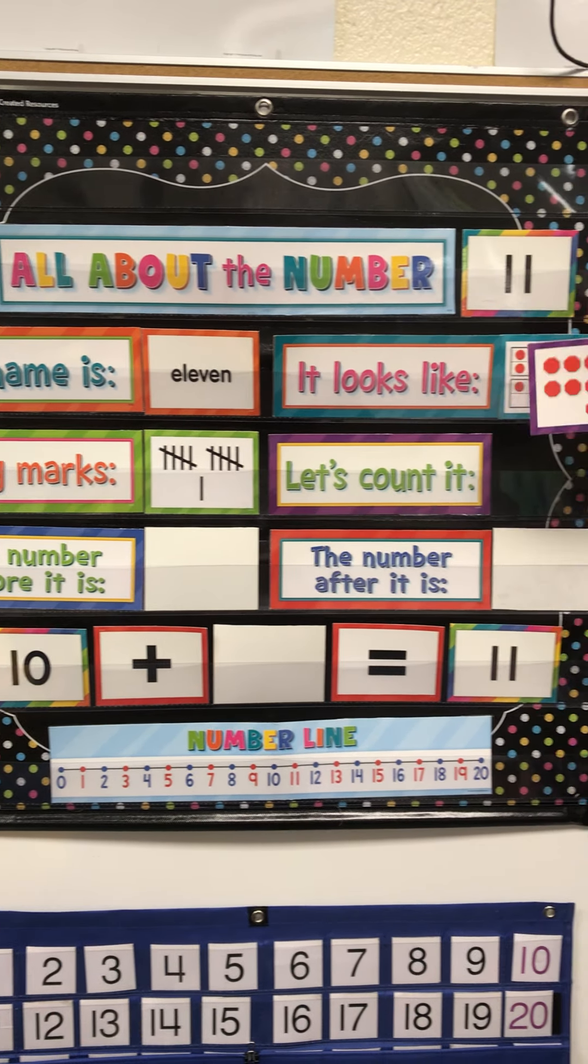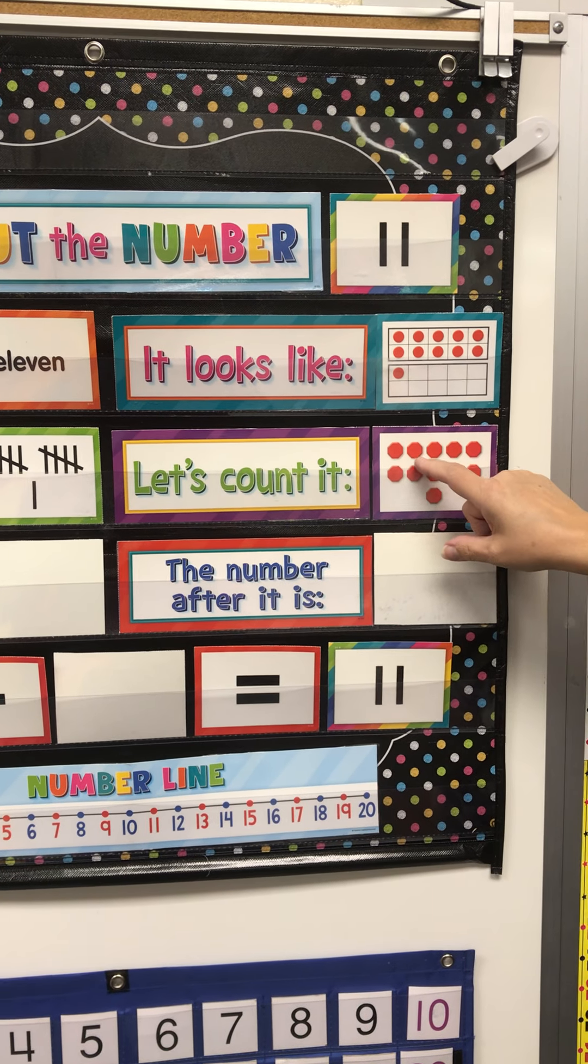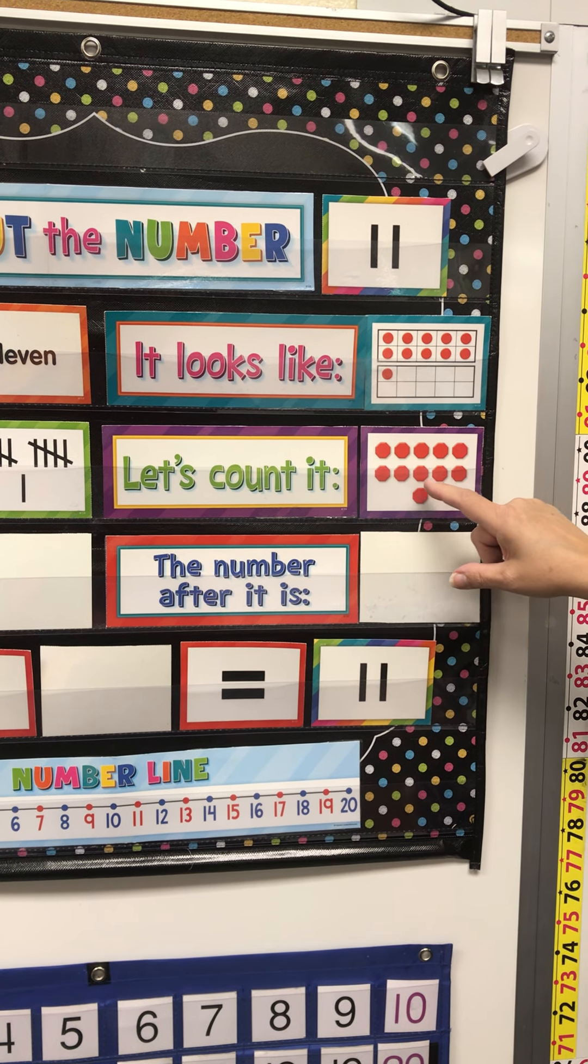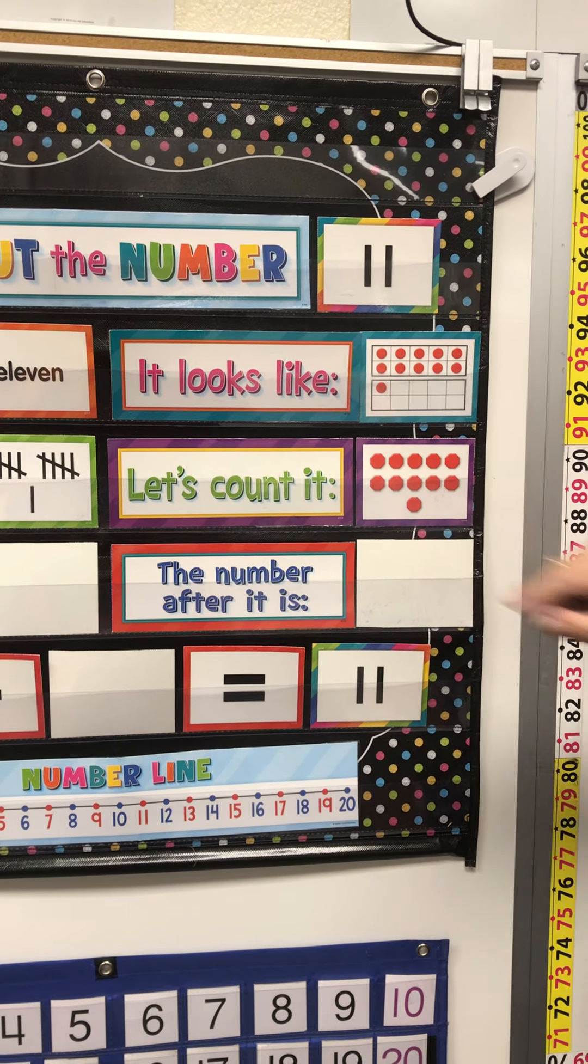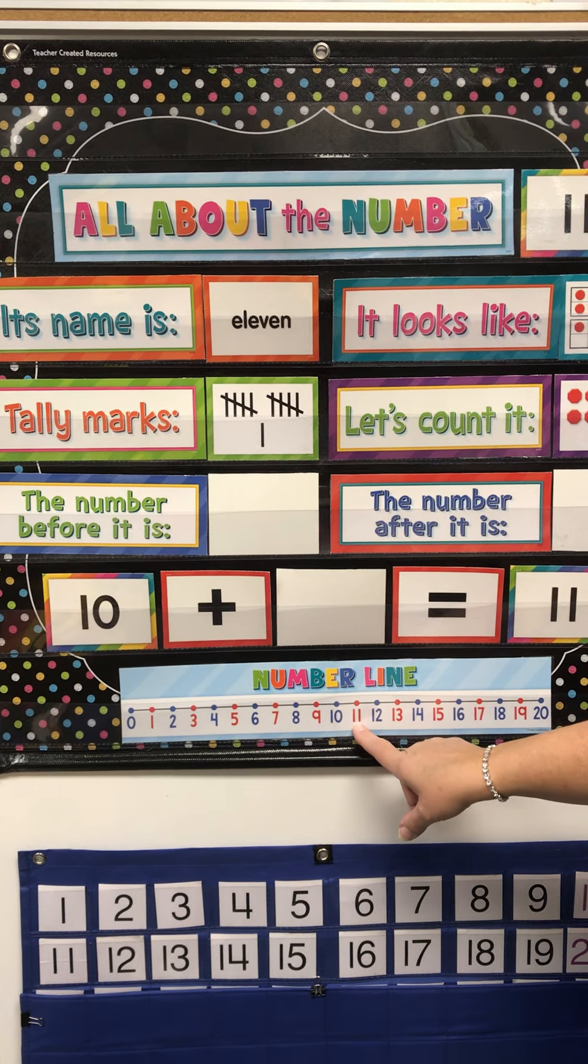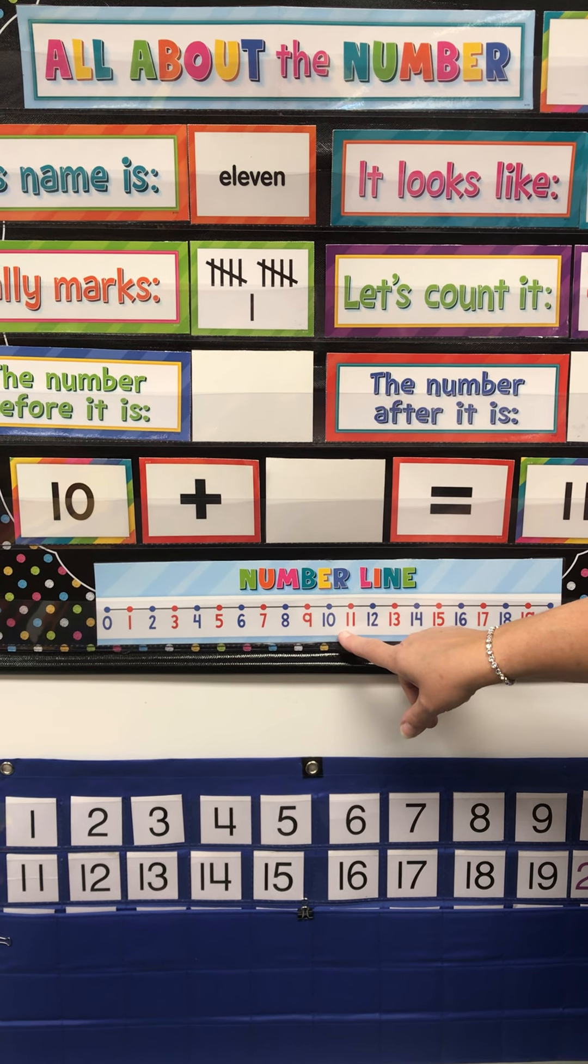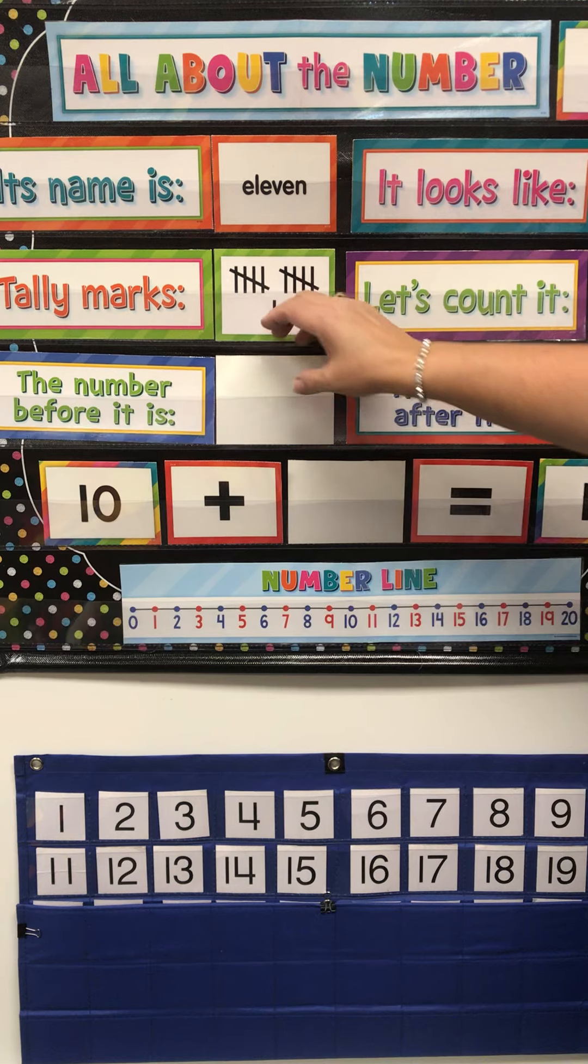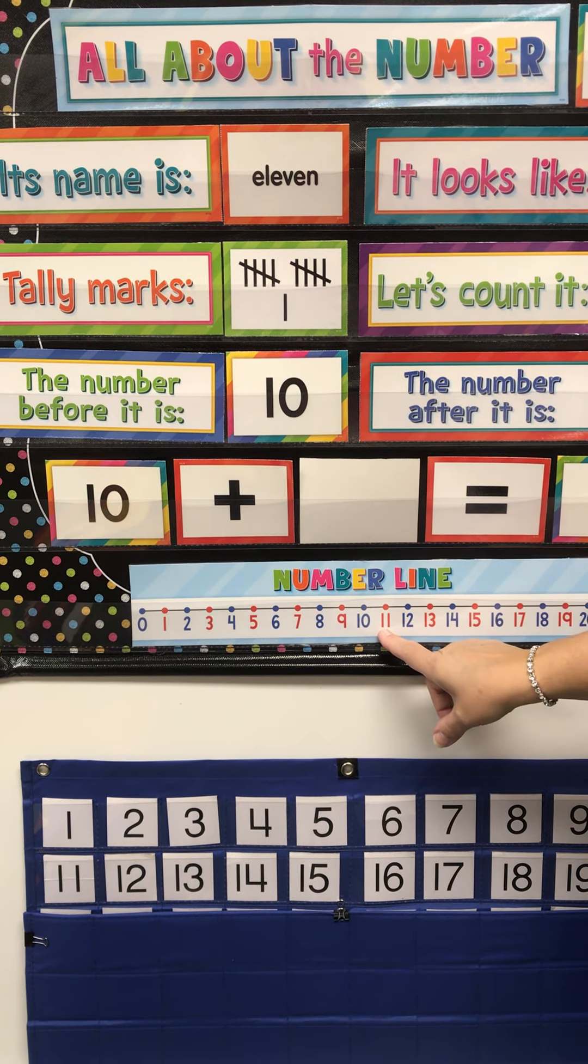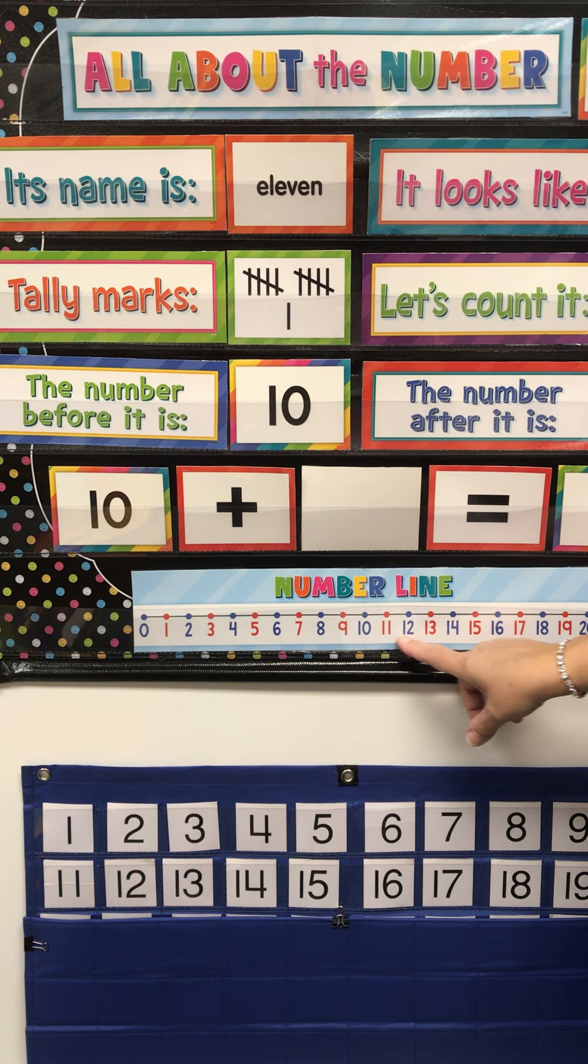Let's count to 11: 1, 2, 3, 4, 5, 6, 7, 8, 9, 10, 11. And here is 11 on our number line. What's the number that comes before 11? 10. Let's go back to our number line. There's 11. What's the number that comes after 11? 12.